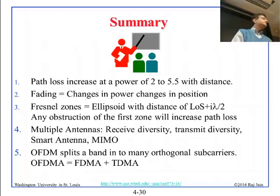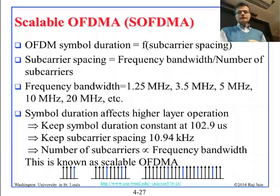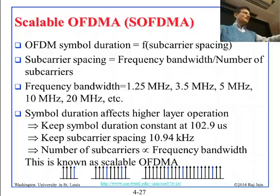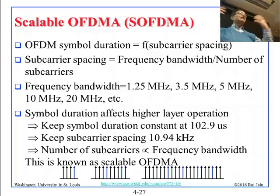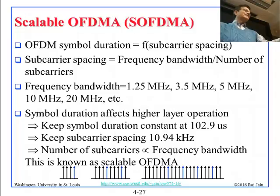On the difference between subcarriers and carriers: they are essentially the same thing. If you use one carrier for the whole band, you call it a carrier. In OFDM, you use thousands of them across the same spectrum, so you call them subcarriers. Each subcarrier is itself a carrier — it carries something — it is just part of a larger group.